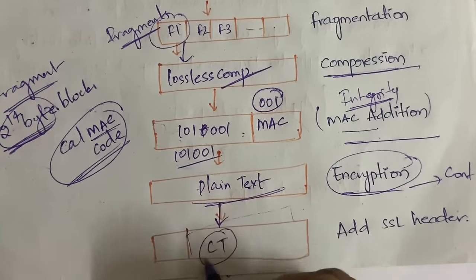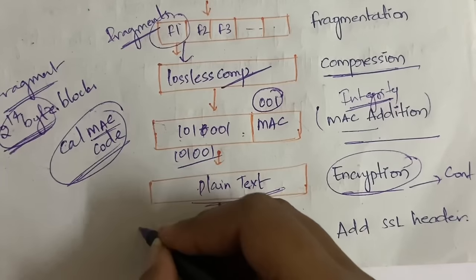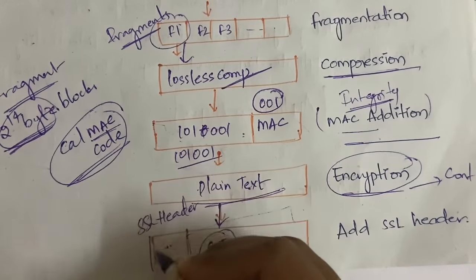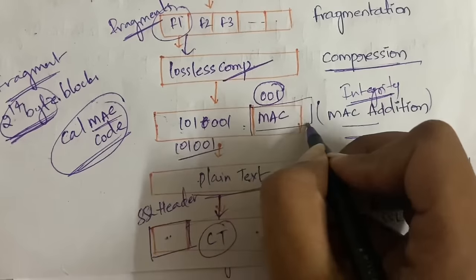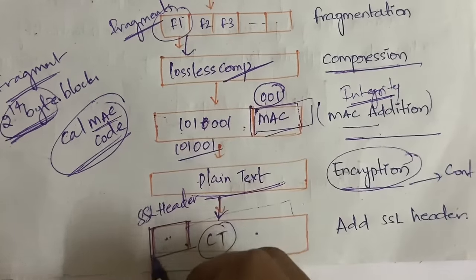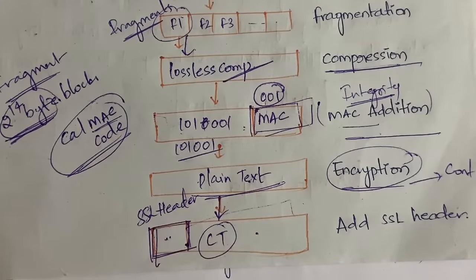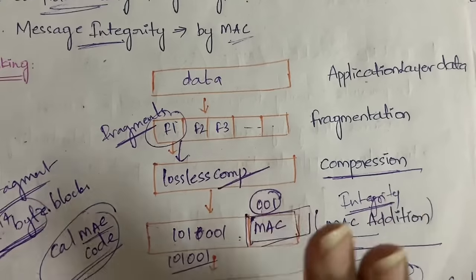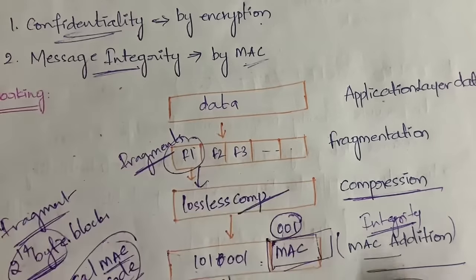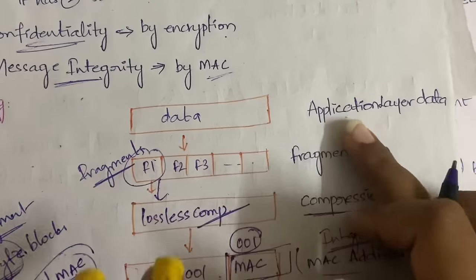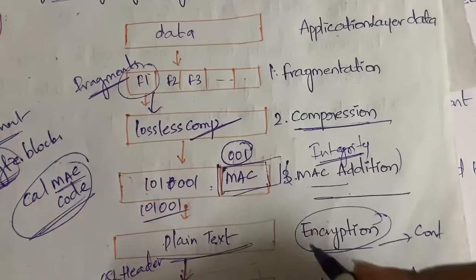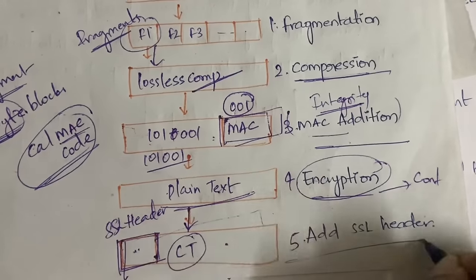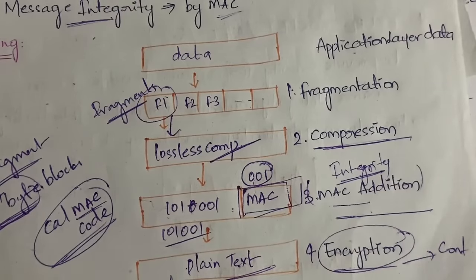For this encrypted ciphertext, you have to add the SSL header at the beginning of the data. You added the MAC code at the end, but the SSL header goes at the start. So in five simple steps, SSL Record Protocol is completed: first, application layer data is fragmented; second, compression; third, MAC addition; fourth, encryption; fifth, add the SSL header. Confidentiality is achieved by encryption and message integrity by MAC. That's all - very easy and simple to remember.